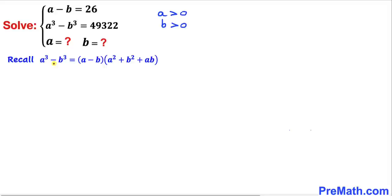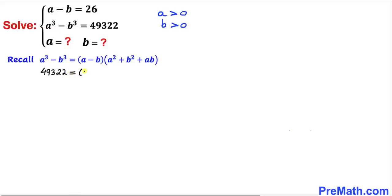Here's our very first step. Let's recall this well-known identity: a cubed minus b cubed equals a minus b, times a squared plus b squared plus a times b. We know that a cubed minus b cubed has been given to us as 49,322, and a minus b is given as 26. So our equation becomes 49,322 equals 26 times a squared plus b squared plus a times b.